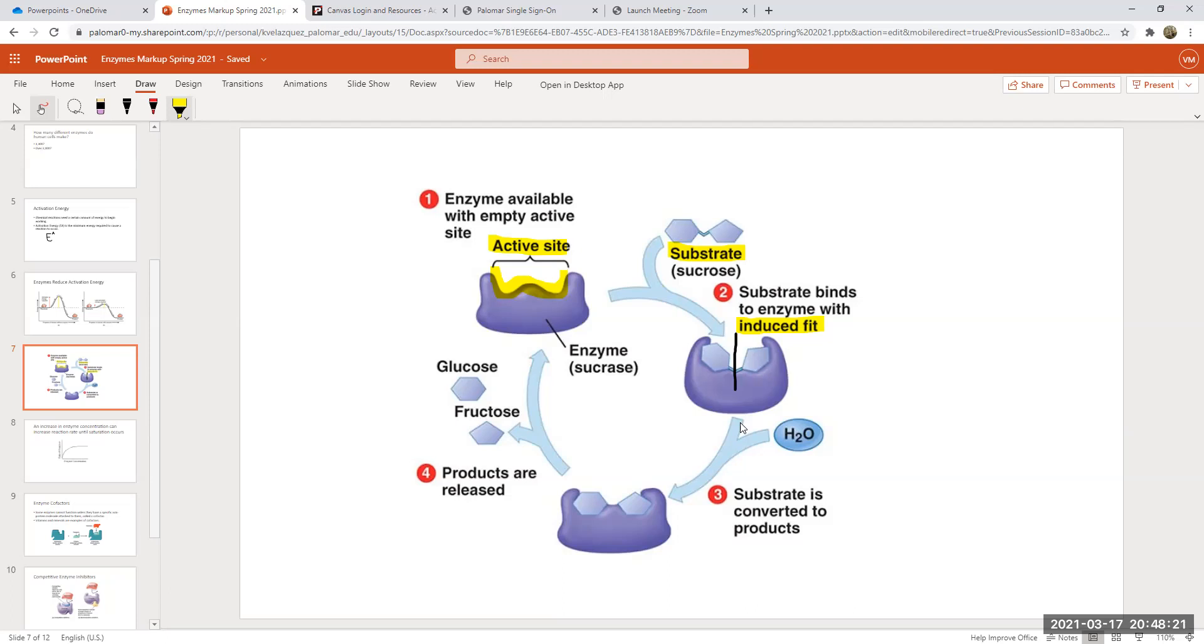That's how, if you don't make lactase enzyme, that lactose sugar never breaks down into glucose and galactose, because if you don't make enough enzyme to carry out that reaction, it just will not happen. So the substrate is converted to the products. The products are released. And this is important because now that enzyme gets recycled, you can just keep using it over and over.